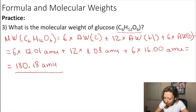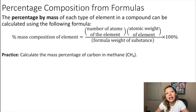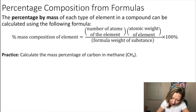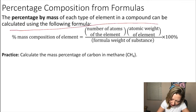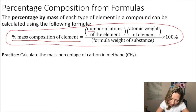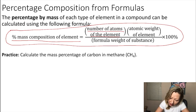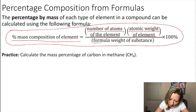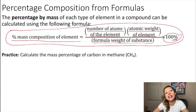It's also important to be able to calculate the percentage by mass of each type of element in a compound. We can do that using this formula: to calculate the mass percent composition of an element, take the number of atoms of that element in the formula, multiply by its atomic weight, divide by the formula weight of the substance, and multiply by 100.